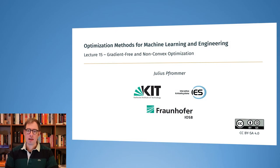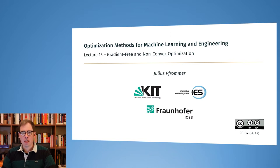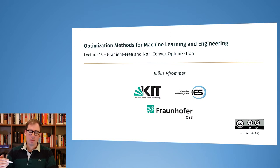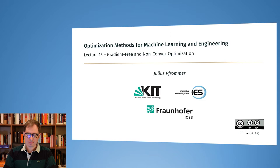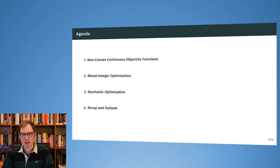Welcome to the last installment of the lecture on optimization methods for machine learning and engineering. Today we will open the scope a little bit to the end of this lecture series and hear about gradient-free and non-convex optimization — things not covered in previous lectures. We will talk about optimization of non-convex continuous functions, mixed integer optimization, stochastic optimization, and there will be a quick recap and outlook.